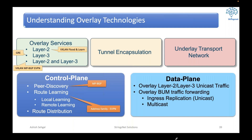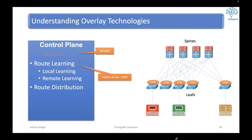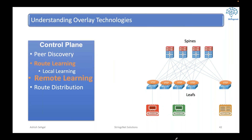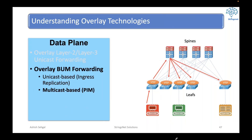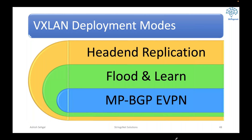We will be talking about the VXLAN control plane, data plane, and various overlay services. We will look at how peer discovery happens, local learning, and remote learning in the case of VXLAN. When it comes to VXLAN deployment, as I mentioned, there are three modes — and the third is what the industry is using today. This is the heart of VXLAN deployment.